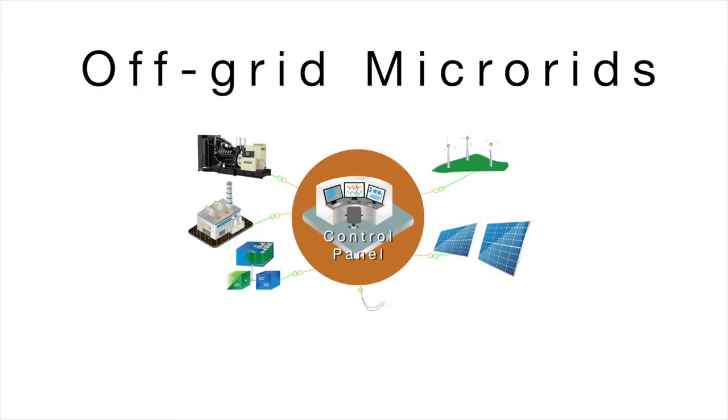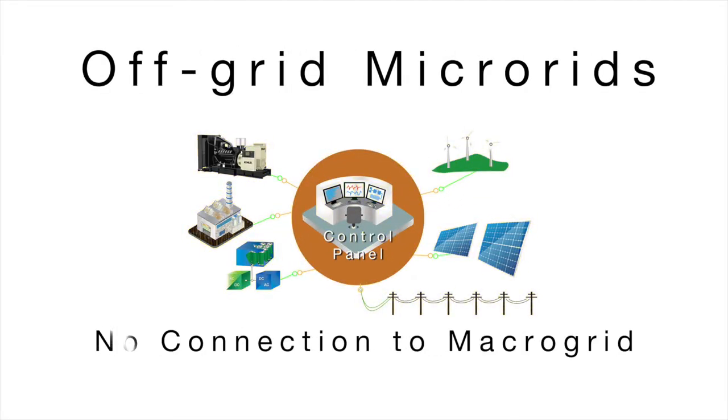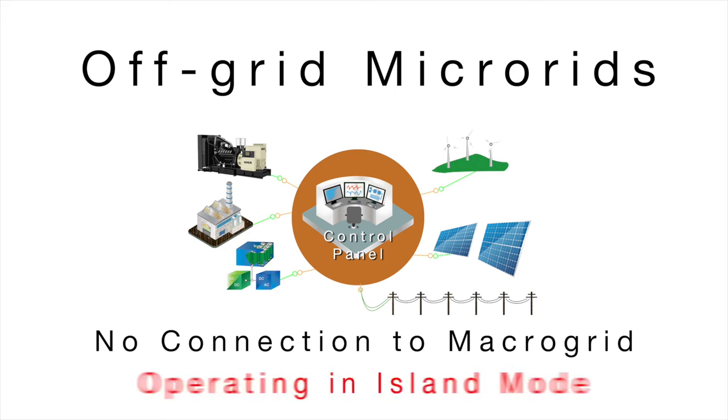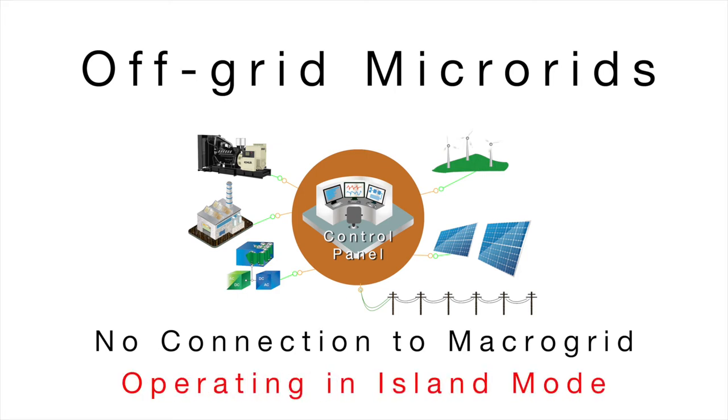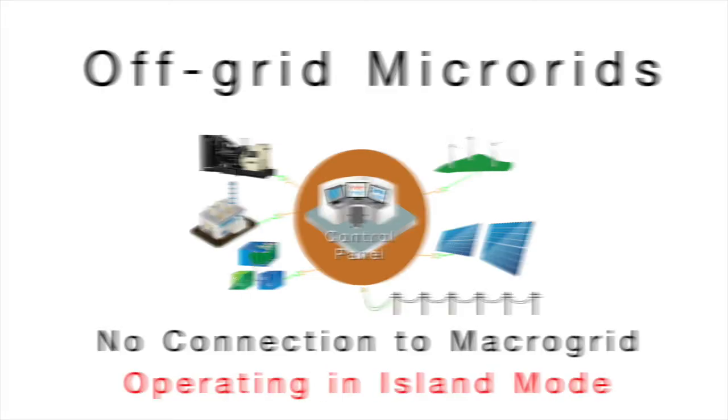Remote microgrids, also referred to as off-grid microgrids, are physically remote and isolated from the macrogrid, and said to be operating in island mode.